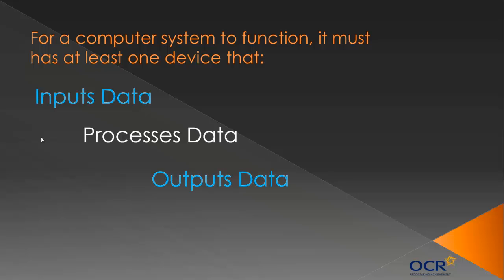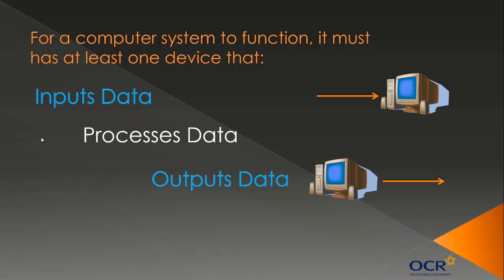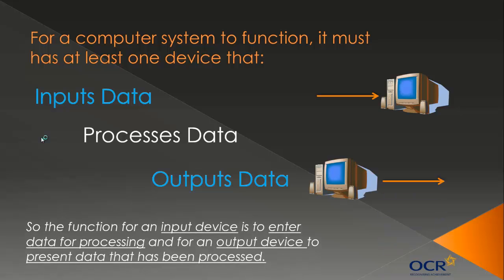Input devices allow data to go into a computer; output devices allow data to come out of it. I want to be really clear here because there was actually an exam question on this a couple of years ago. Data goes into the computer through input devices for processing — the data is not just in the computer for no reason, it's there to be processed.